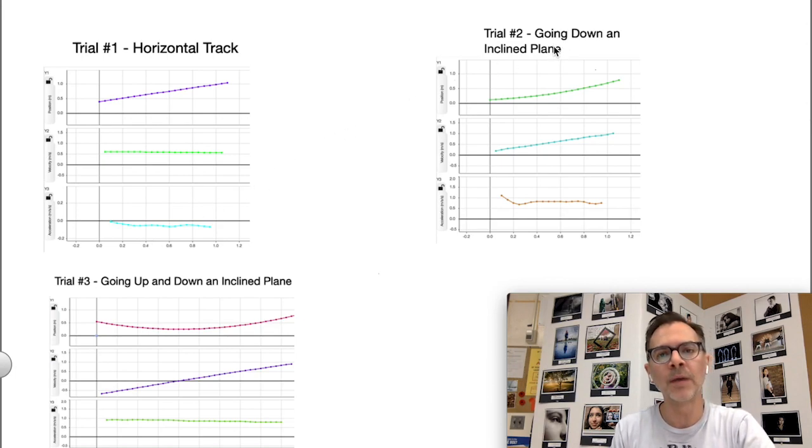In trial number two, we're now speeding up, going down the plane. So we have a curve like this on our position graph. We're covering more and more distance each second, so it curves up like that. Again, it does not start at the origin.